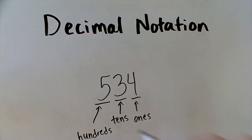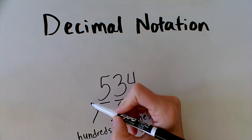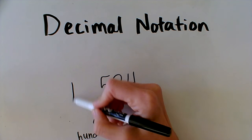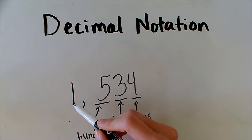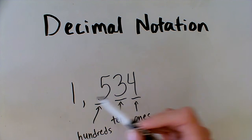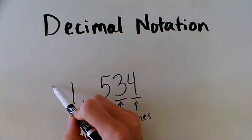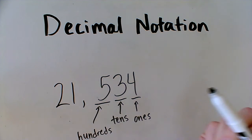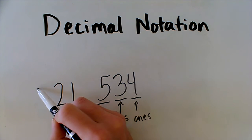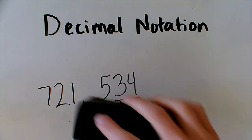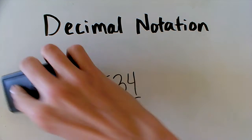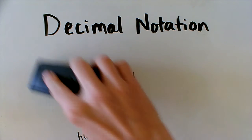We could add a comma and keep going — we could even put another digit here. That would be the thousands place, the ten thousands place, the hundred thousands place, and we could keep going even larger than that, but let's keep it simple.